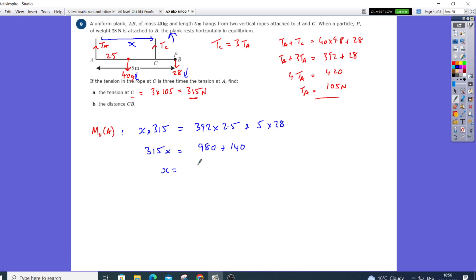So x equals 1120 divided by 315. That's going to give me that distance here.